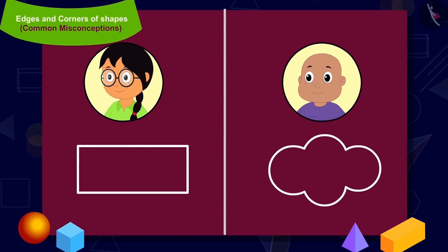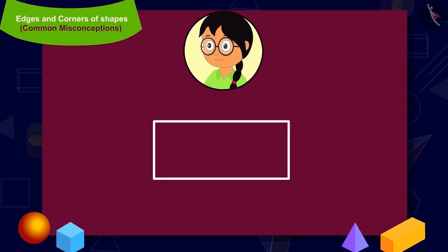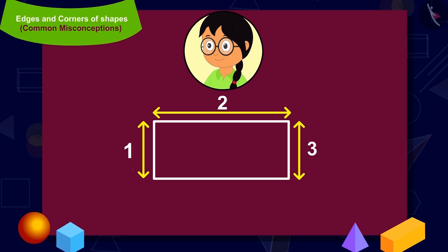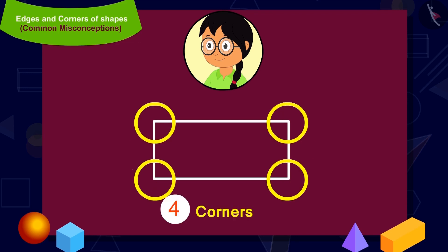Children, can you say out of the two, whose shape is correct? Let us see Minu's shape first. How many edges does Minu's shape have? Four. And how many corners? Four. So is Minu's shape correct? Yes, it is.